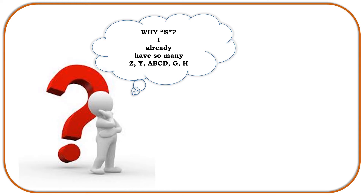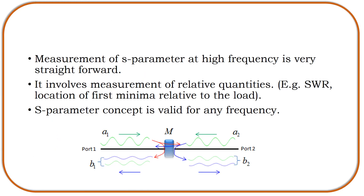These other port parameters include Z, Y, A, B, C, D, G, H, and so on. Then we are going to take up our device under test (DUT) and identify the S-parameters corresponding to our two-port network. We are also going to correlate the value of the S-parameter with the VSWR and the reflection coefficient.